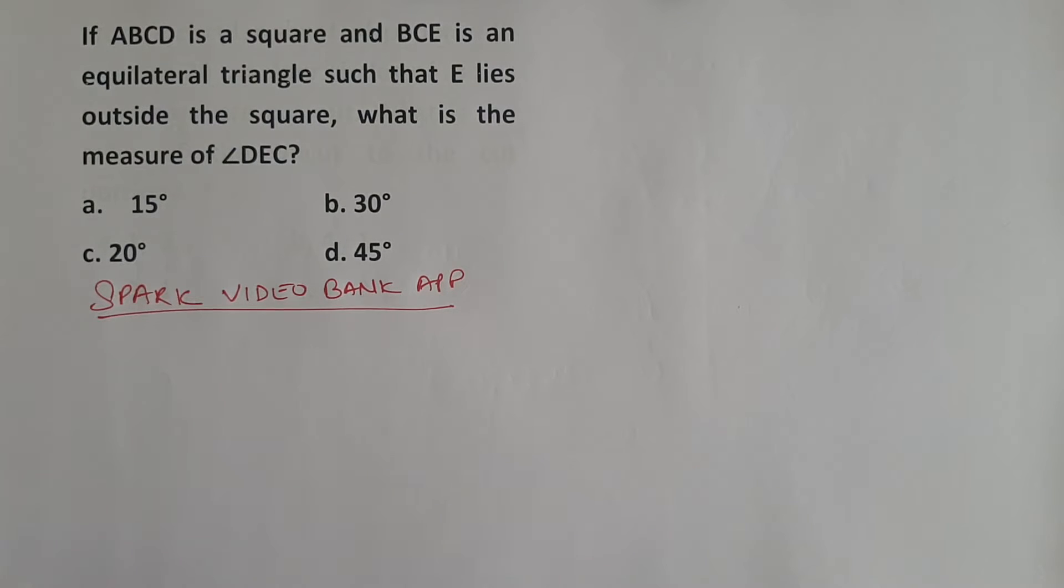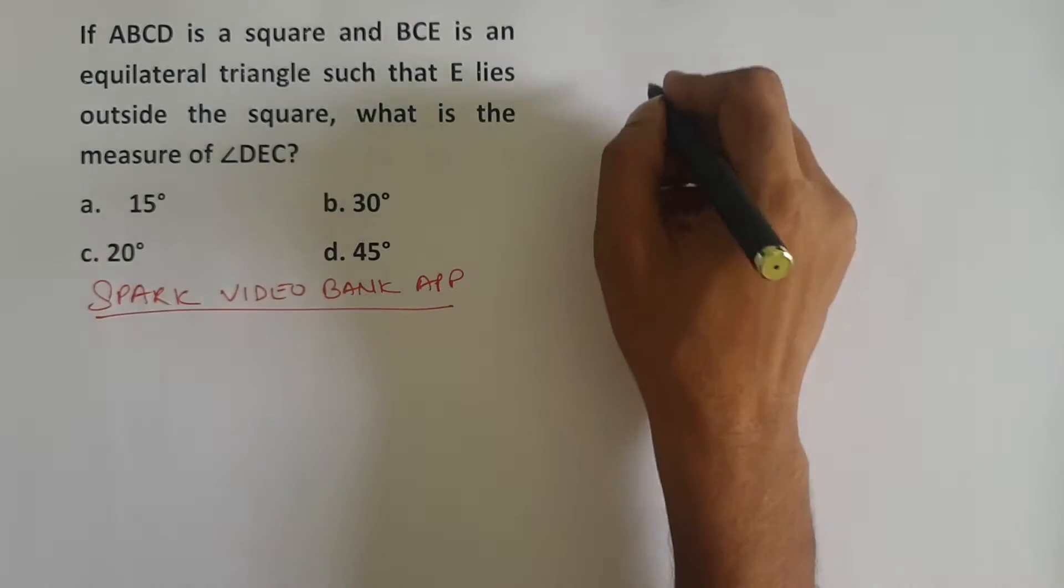ABCD is a square and BCE is an equilateral triangle such that E lies outside the square.